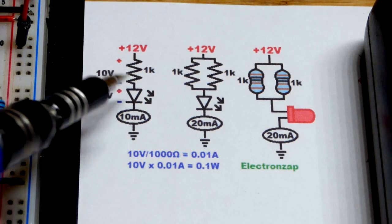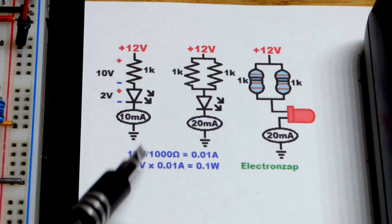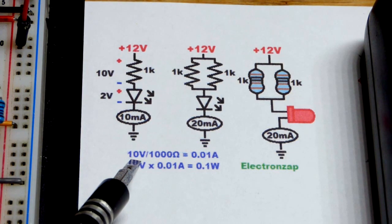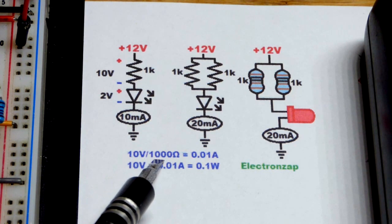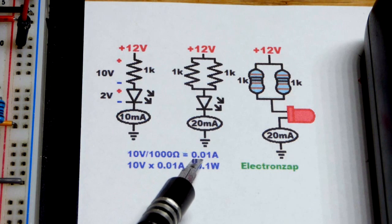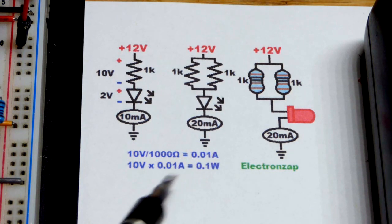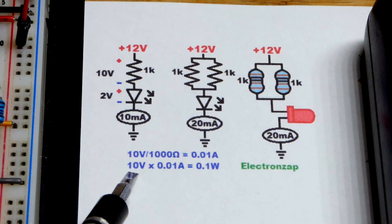And so you'll have 10 volts across the resistor, approximately. So to calculate how much current is going to flow through there, this is Ohm's law: you've got 10 volts divided by 1,000 ohms equals 0.01 amps, right there, 10 milliamps.